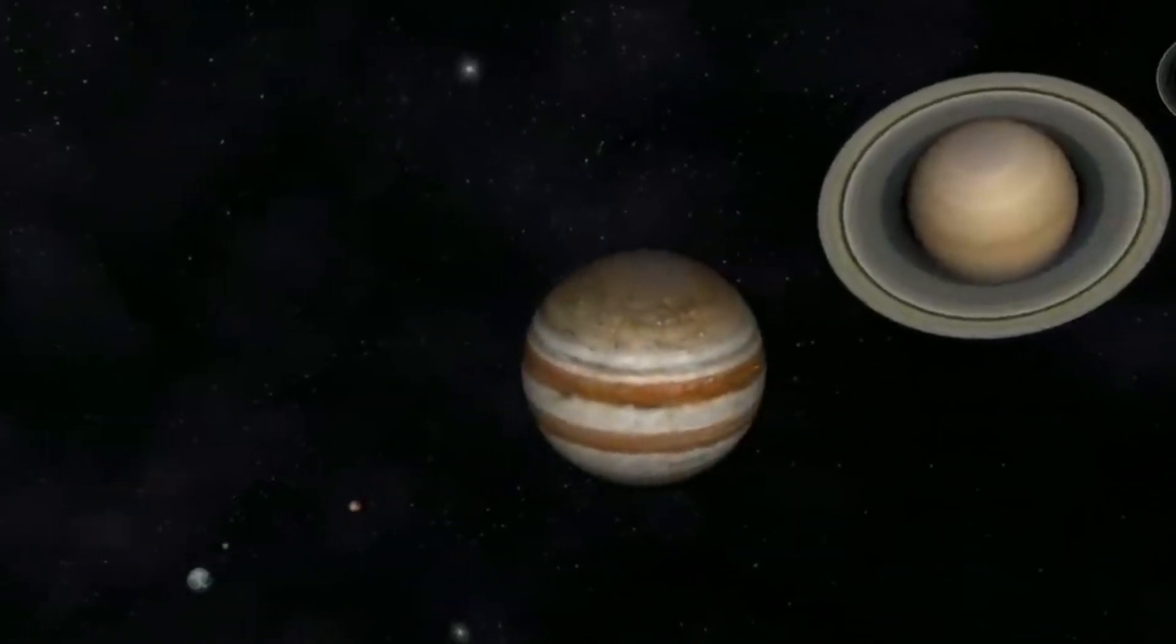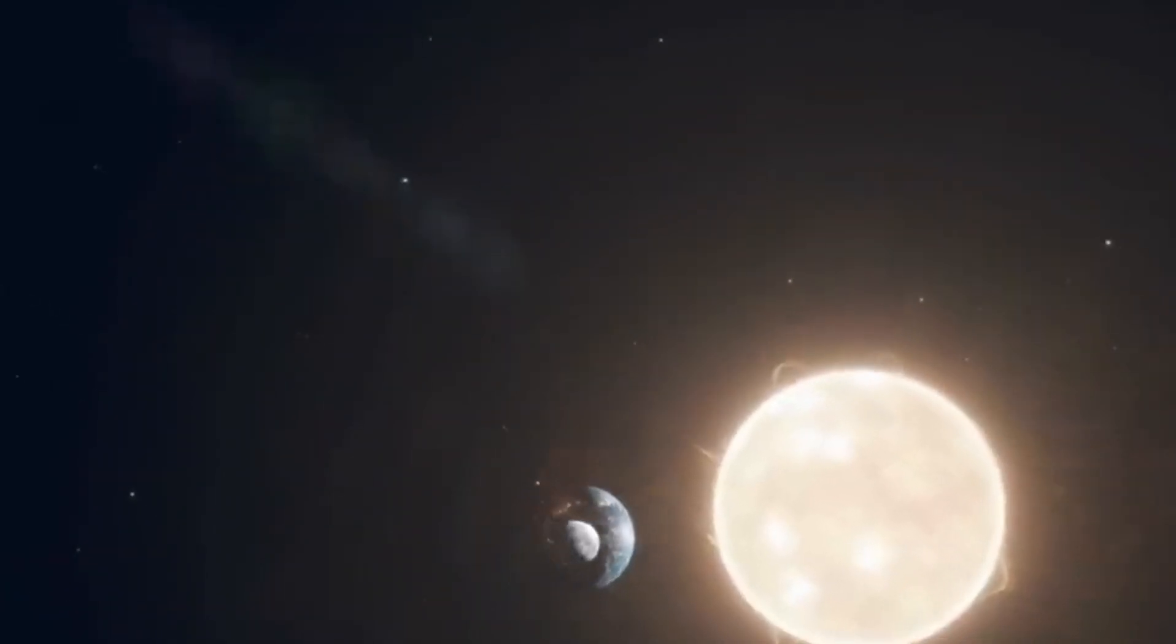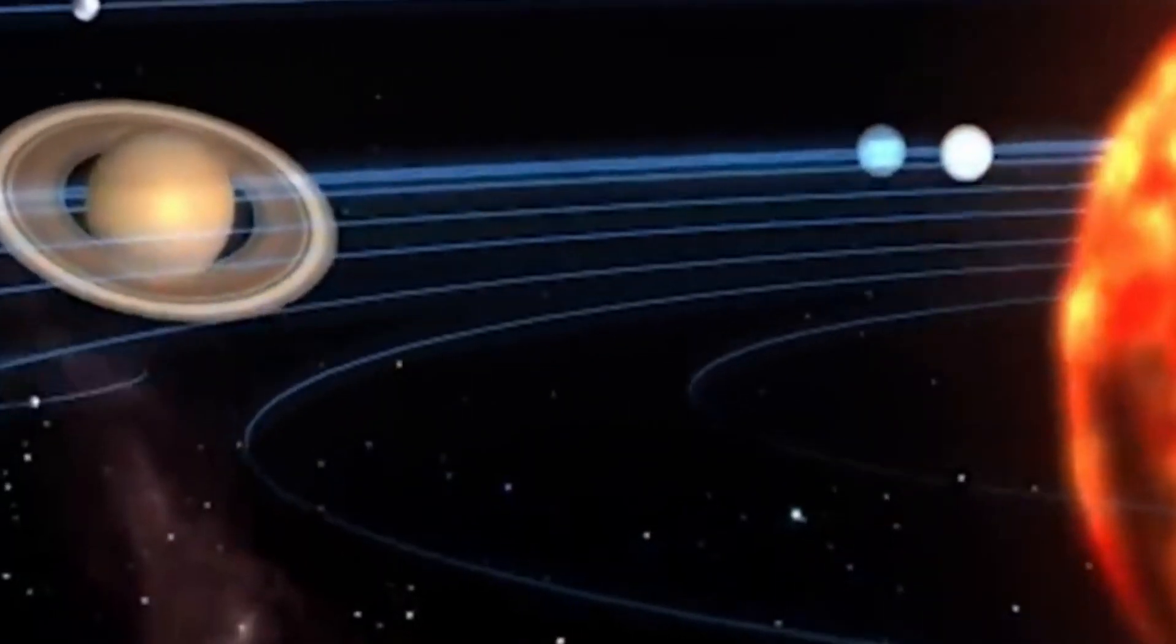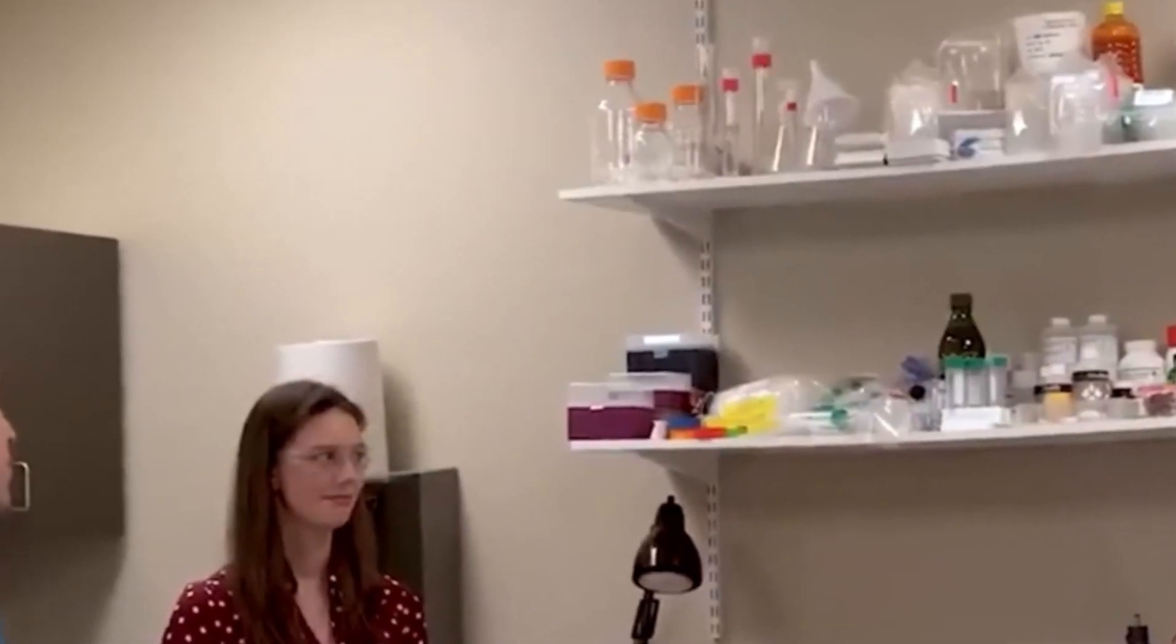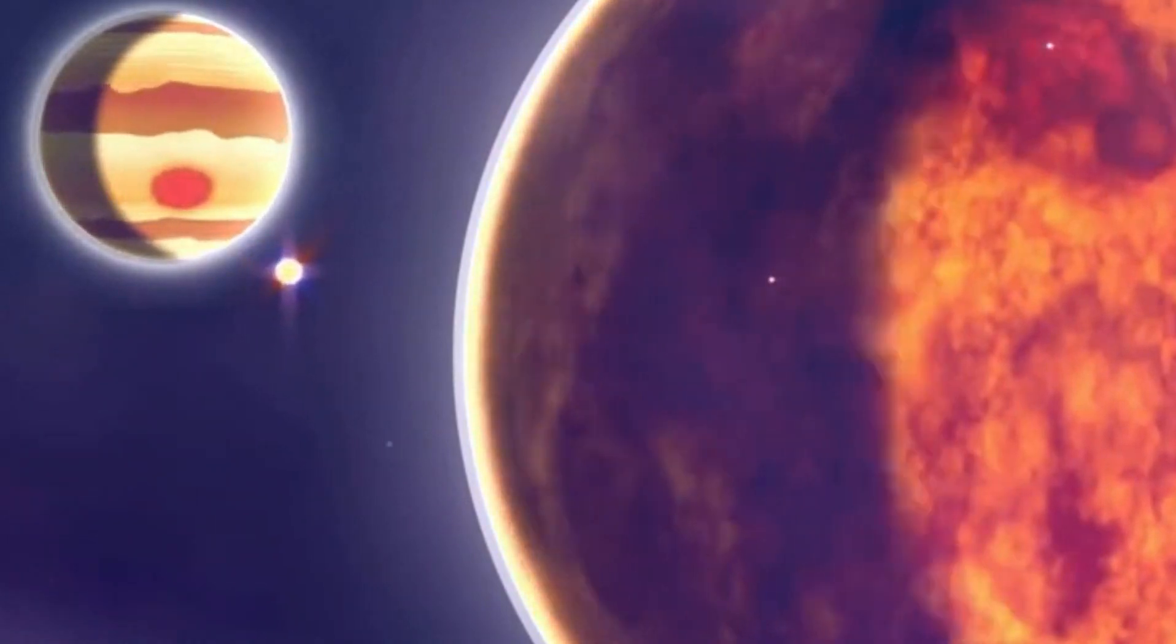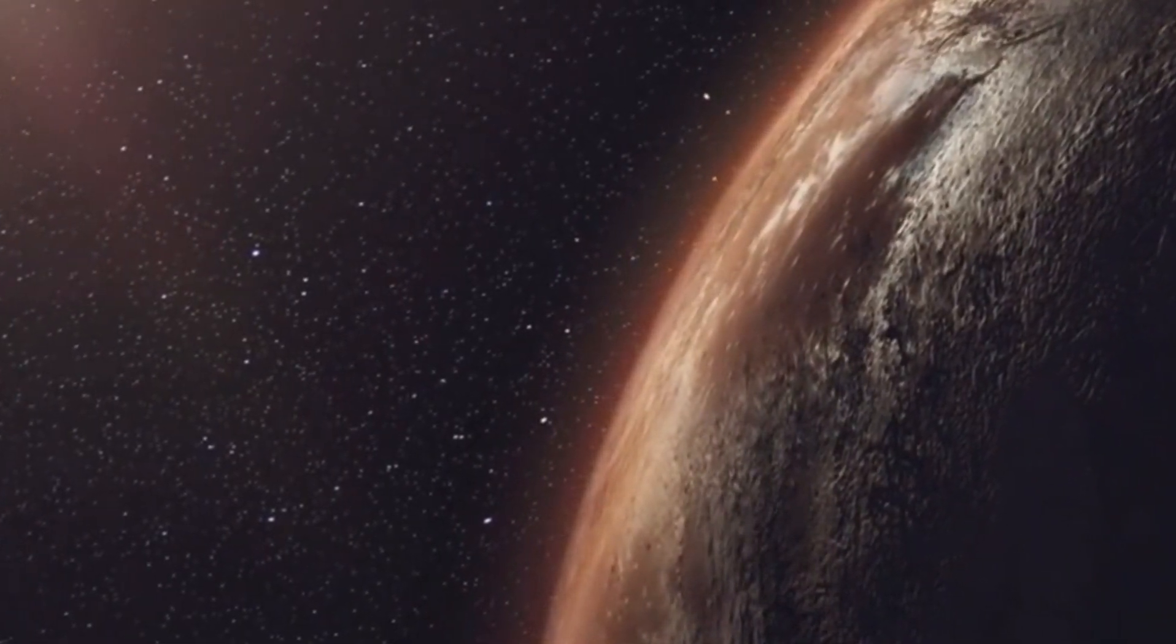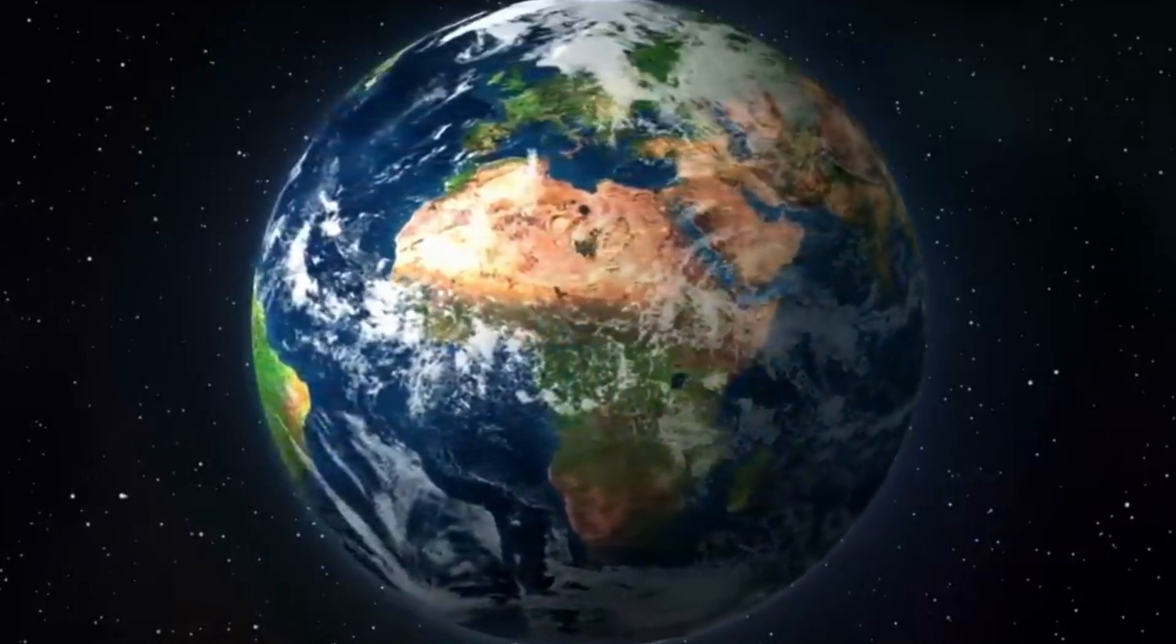In our own solar system, theories about the late heavy bombardment suggest that a period of increased comet and asteroid collisions occurred due to gravitational disturbances from the outer planets. This phenomenon, believed to have taken place approximately 4 billion years ago, indicates a time when the solar system was a much more chaotic and violent place. The gravitational disturbances are thought to have been caused by the migration of the gas giants, which would have disrupted the orbits of numerous smaller bodies in the Kuiper Belt and Asteroid Belt.